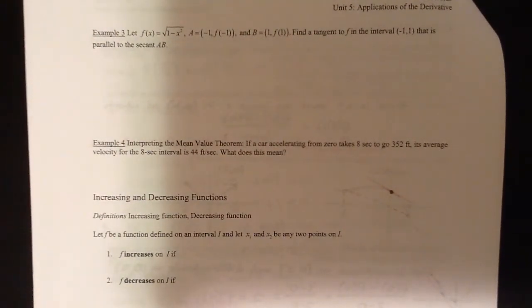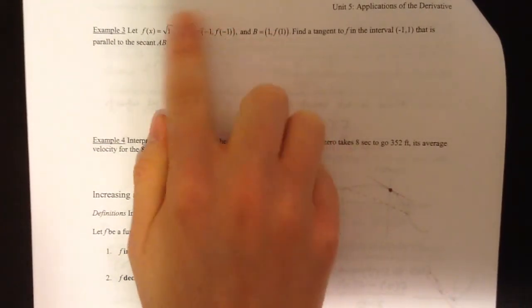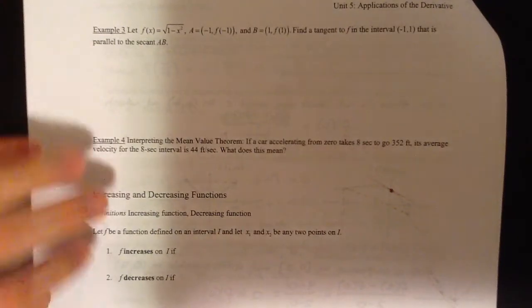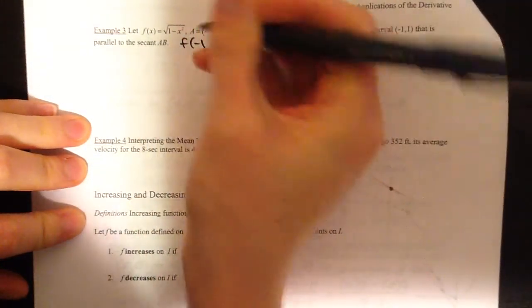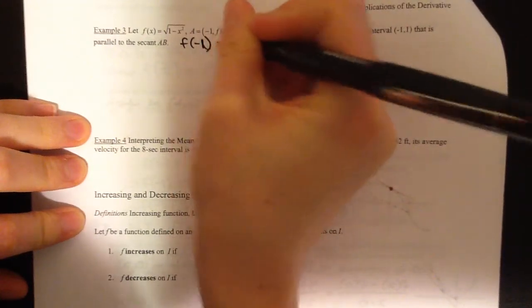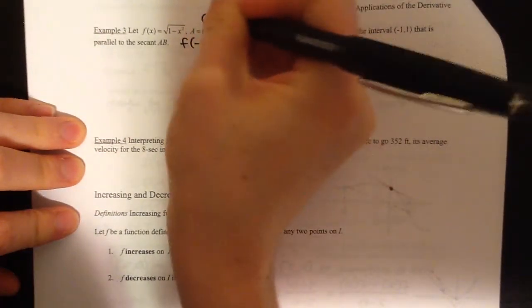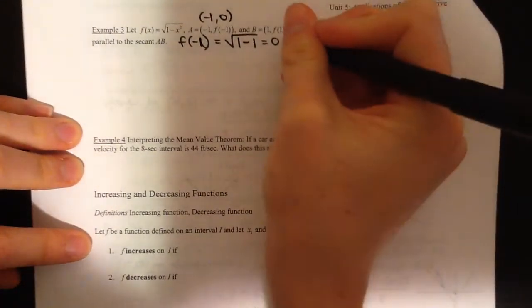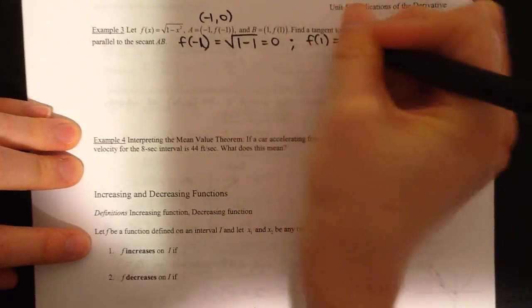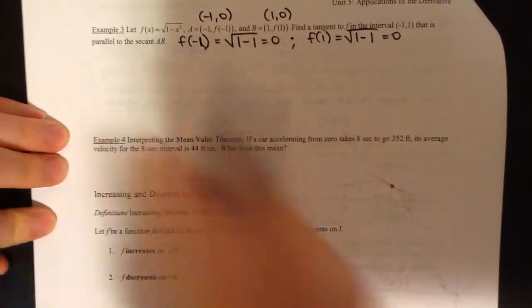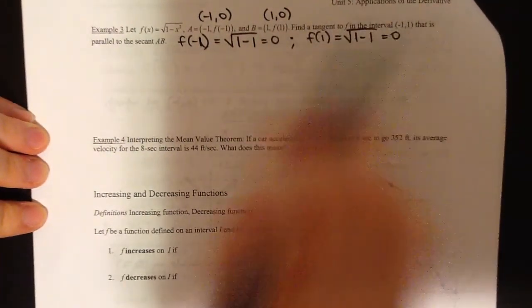Example 3: we've got this function with points A and B, and we want to find a tangent line on the interval that's parallel to the secant line. Plugging negative 1 into √(1 − x²): we get √(1 − 1) = 0, so that's the point (−1, 0). Plugging in 1: √(1 − 1) = 0, so that's the point (1, 0).